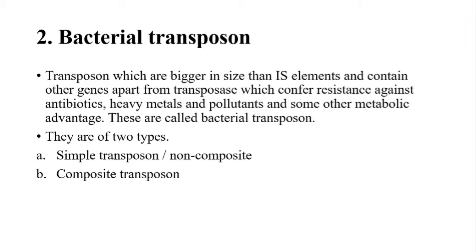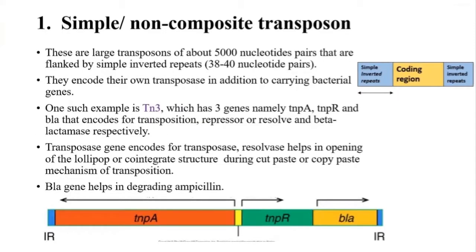Bacterial transposons are also of two types: simple transposons, also known as non-composite transposons, and composite transposons. Simple or non-composite transposons are large transposons, nearly about 5000 nucleotide pairs long. Their coding region is surrounded by two simple inverted repeats, and the length of these simple inverted repeat sequences varies from 38 to 40 nucleotide pairs. Their coding region also contains other genes apart from transposase, such as antibiotic resistance genes.